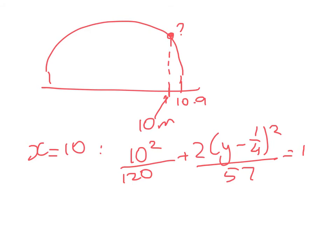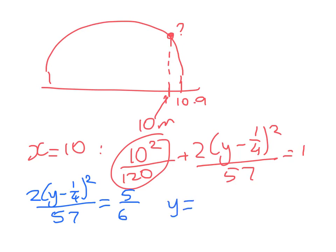So solving that, this works out to be 5 sixths. So we get 2 into y minus 1 quarter squared over 57 equals 5 sixths. So working through that, we get y equals, I'm going to skip a couple of lines here because not having my stylus is driving me slightly around the bend today. So we get y is equal to 1 quarter plus or minus the square root of 57 divided by 12. Now we're going to ignore the negative solution because we're dealing with a height up here.